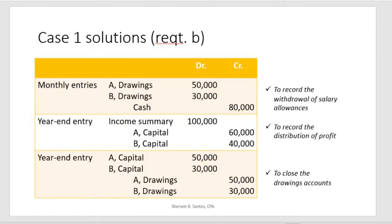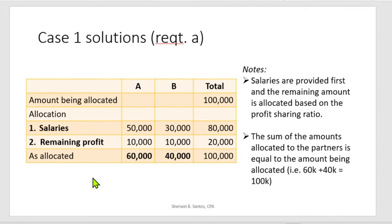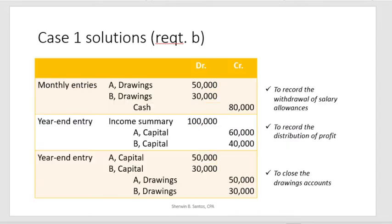For the journal entries: to record the withdrawal of the salary allowances, it is recorded as a drawing — a temporary drawings account is used. Since the salary is paid monthly, the entry is: debit A Drawings $50,000, debit B Drawings $30,000, and credit Cash $80,000. This is from the point of view of the partnership.